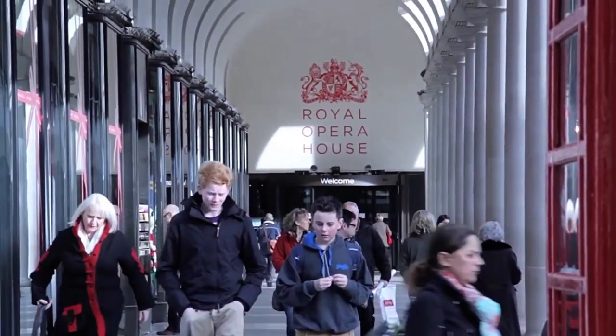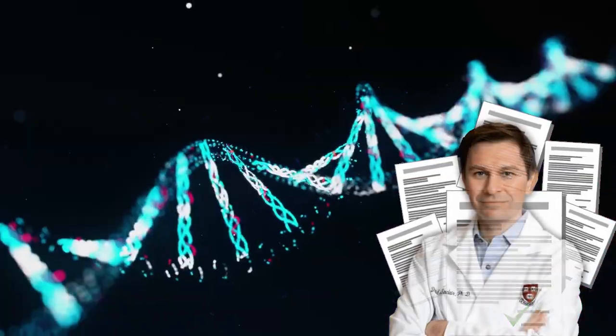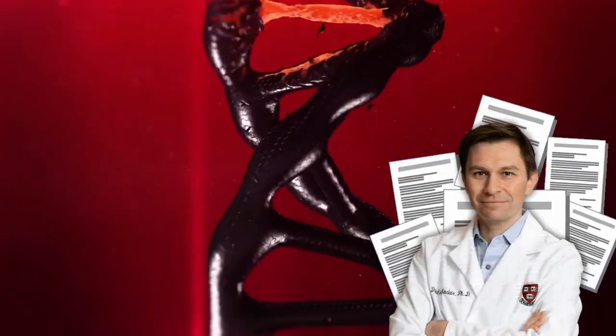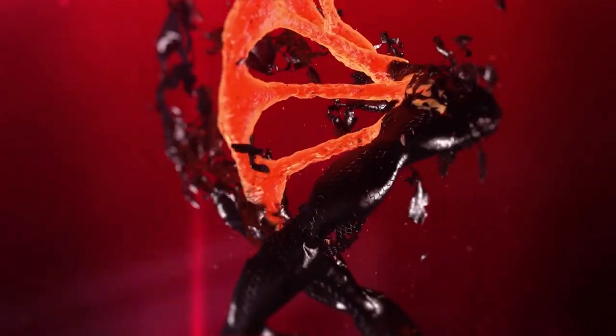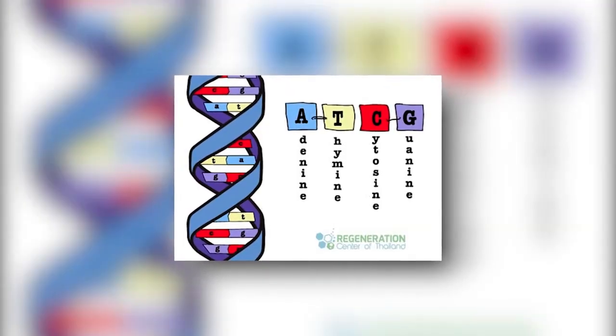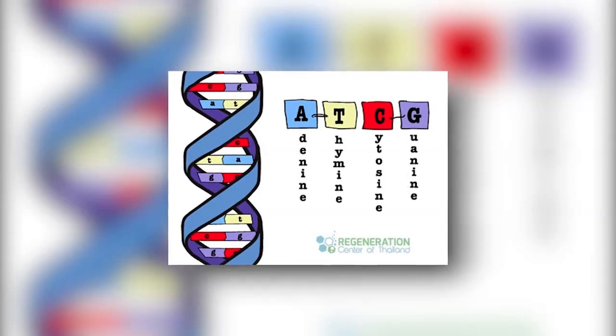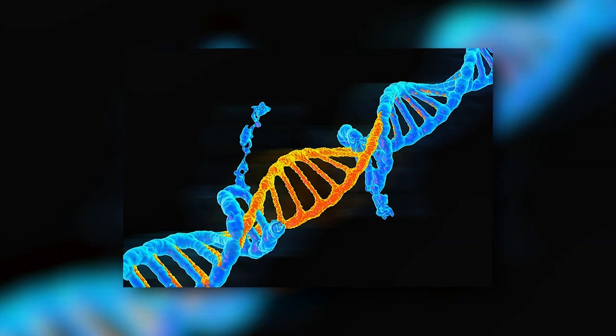That's a huge shift, and it's really central to the sources we're looking at today. For a long time, the main idea was it's about DNA damage accumulating, like typos creeping into the book of life. Right, the actual letters A, T, C, G getting messed up, broken.